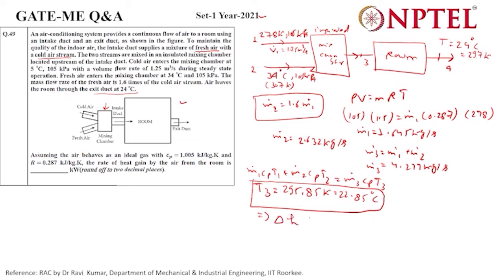How much enthalpy it has gained from the room, or heat, would be delta H. It would be m dot 3 times cp times delta T. Delta T would be the exit of the room minus entry of the room.